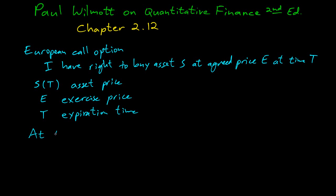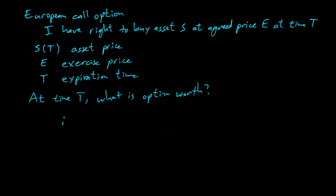So at time T, what is the option worth? If the price has gone up, so if S of T is bigger than the exercise price, I can buy the asset S at price E and it's worth more. So I made a profit. This option has value S of T minus E.